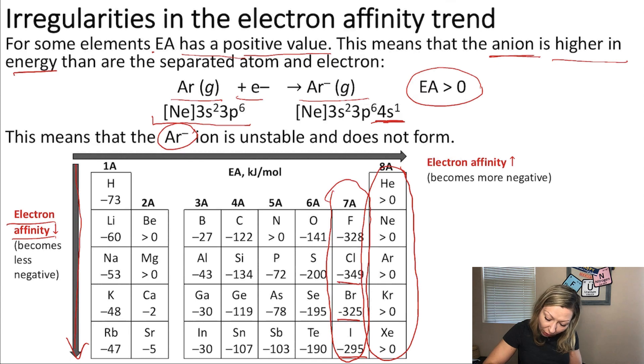However, fluorine's electron affinity is actually less negative than chlorine's. Why is it happening? This is due to the fact that the 2p orbital in case of fluorine is really, really tiny compared to the p orbitals in chlorine, bromine, and iodine where you would add the extra electron.